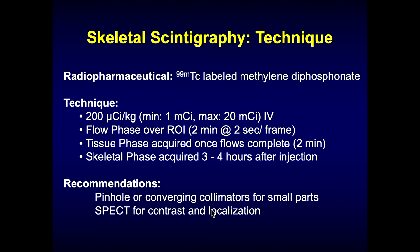When we talk about skeletal scintigraphy, we are typically talking about technetium-labeled MDP. You can give either an empiric dose or a weight-based dose. Usually you will do a flow phase over the region of interest for about two minutes, followed almost immediately by tissue phase images, which are typically another two minutes, and then skeletal phase images acquired three to four hours later. You can often get away with just doing skeletal phase imaging, particularly if you are looking at metastases on follow-up. However, if there is any chance you want to see whether you have increased blood flow and capillary permeability — as in infection or an osteoid osteoma — it can be very helpful to do three-phase imaging.